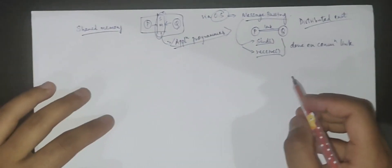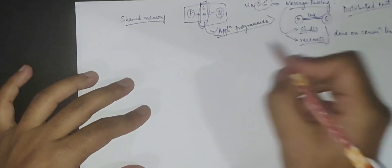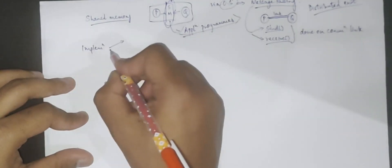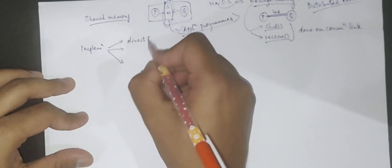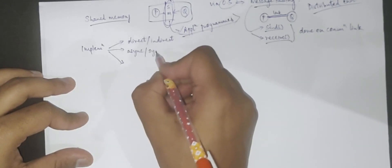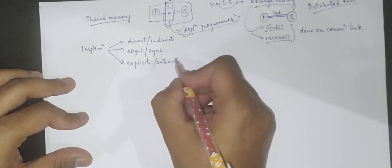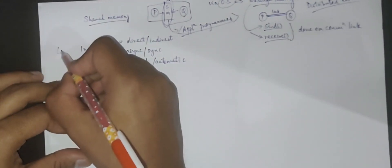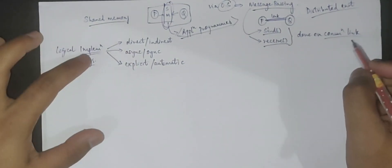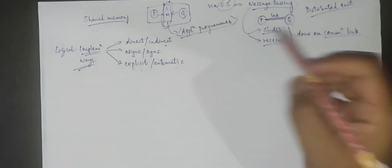Now let's talk about how we implement this communication link logically. We can implement it in three ways: first, direct or indirect communication; second, synchronous or asynchronous communication; and third, explicit and automatic buffering. These are the three logical implementation ways for this communication link.